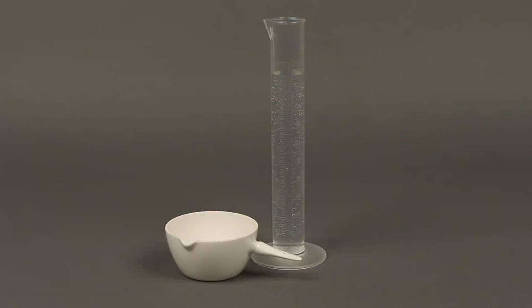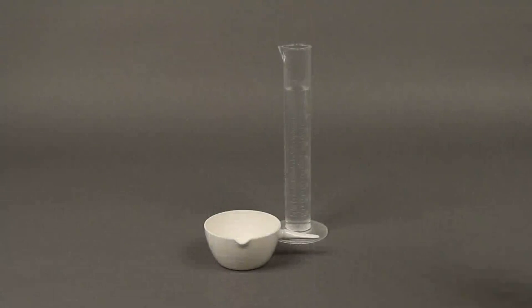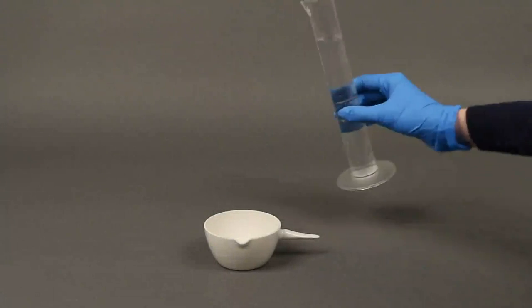First, measure 100 ml of the water to be tested in the graduated cylinder. Then pour the sample into the casserole dish.